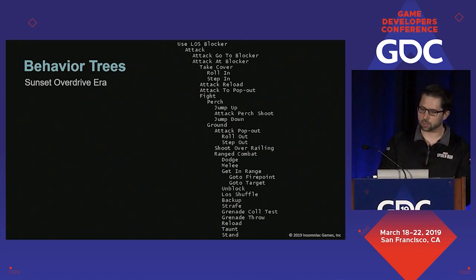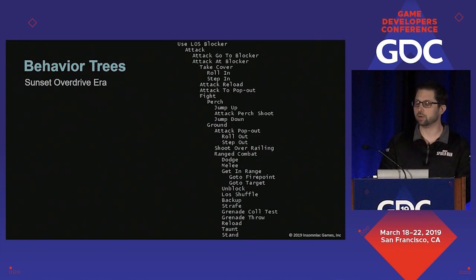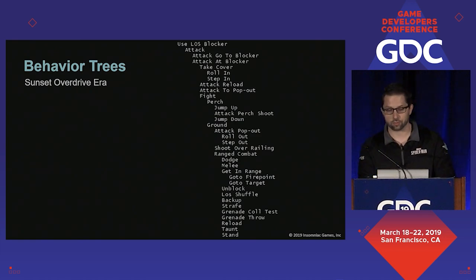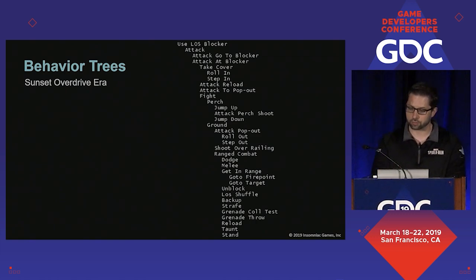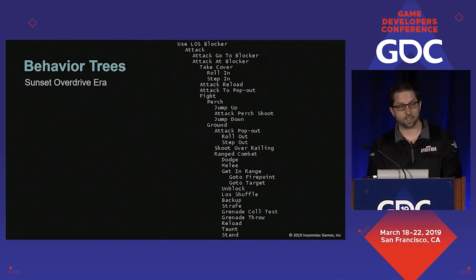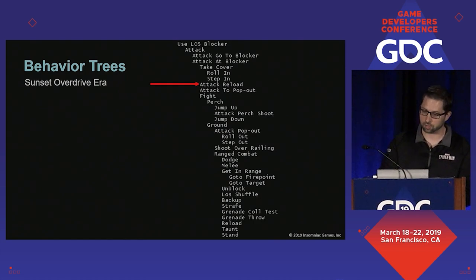When we first implemented behavior trees into our engine, a lot of them tended to have a structure like this. This is one corner of the behavior tree that drove the behavior of ranged enemies in Sunset Overdrive. This simple subtree uses 34 discrete nodes and many of these just mapped to a simple AI state such as playing an animation, shuffling around, meleeing, or aiming.